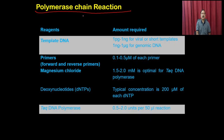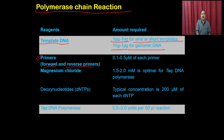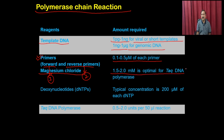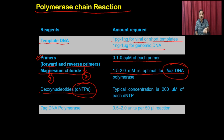For PCR you require: template DNA, two different primers (forward primer for strand 1 and reverse primer for strand 2), thermostable DNA polymerase such as Taq DNA polymerase, and a thermal cycler. The thermal cycler is a heating block where you keep tubes and vary the temperature through stages 1, 2, and 3. You also require magnesium chloride as a cofactor for Taq polymerase at 1.5–2 mM, dNTPs as building blocks, enzyme, buffer, and water.